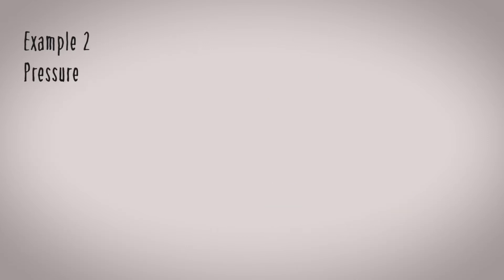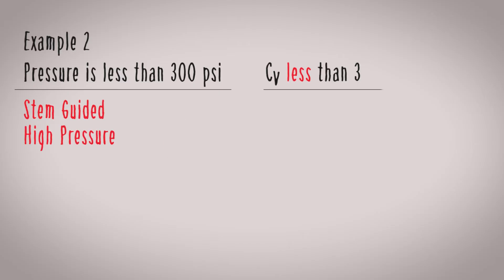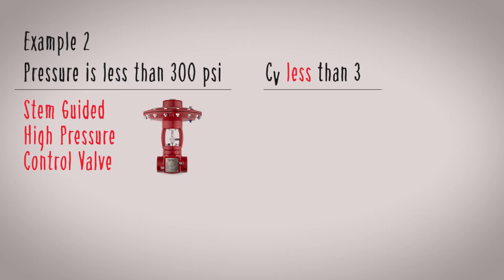In example 2, your pressure is still less than 300 psi, but your required CV is less than 3. In this example, you should use a stem-guided high pressure control valve because it can meet your small CV requirements.